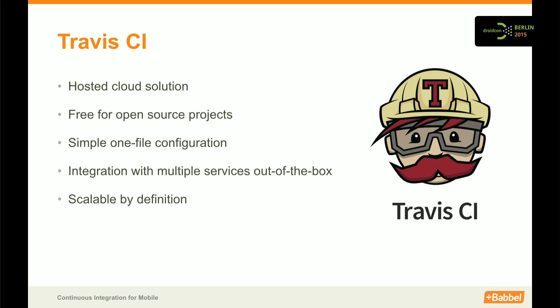You can have premium accounts if you are a bigger organization and want to keep your code private. The configuration is super simple — just one file, just five lines more or less that you can find on the website, with more customizable configurations available on forums. It gives easy integration with multiple services out of the box: Atlassian tools, GitHub, and everything you need to get all feedback right away within the tools your team is already using. And since it's a cloud solution, it's scalable by default.